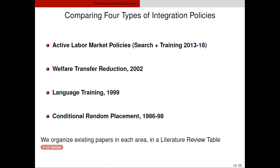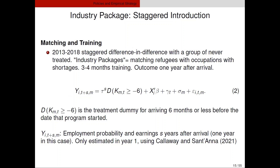The four policies we will evaluate are: one, active labor market policy; two, a cut in welfare transfers; three, language training improvement; and four, initial random assignment of refugees across counties and local labor markets. Those are the dates in which these policies were essentially deployed. Let me describe briefly what method we use for each to identify its effect.